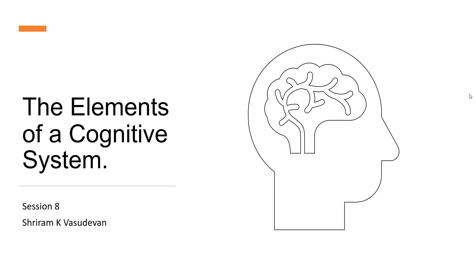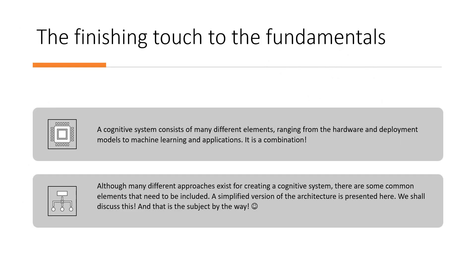Hello friends, welcome back. In this session, we will understand in depth about the elements of a cognitive system. This is something very important and we are going to discuss in depth each of these elements in the sessions that are going to come in the near future. We will give you a glimpse of what are the elements with a brief overview, and that will be really helpful for you to get into deeper learning.